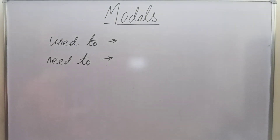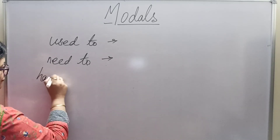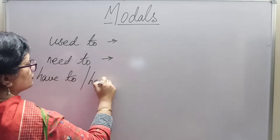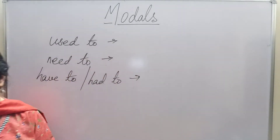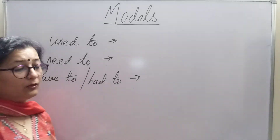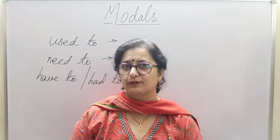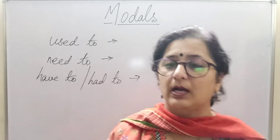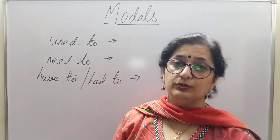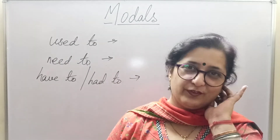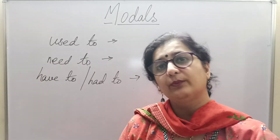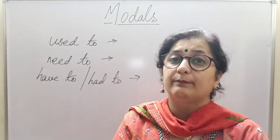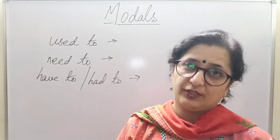Our next one is 'have to' or in the past form 'had to.' This is again about obligation, necessity, or compulsion: 'You have to understand the formula — you have to know the formula before you solve your sum.' Similarly, 'had to': 'I had to do something before doing something else.' So that's a compulsion or obligation that you are putting forward.